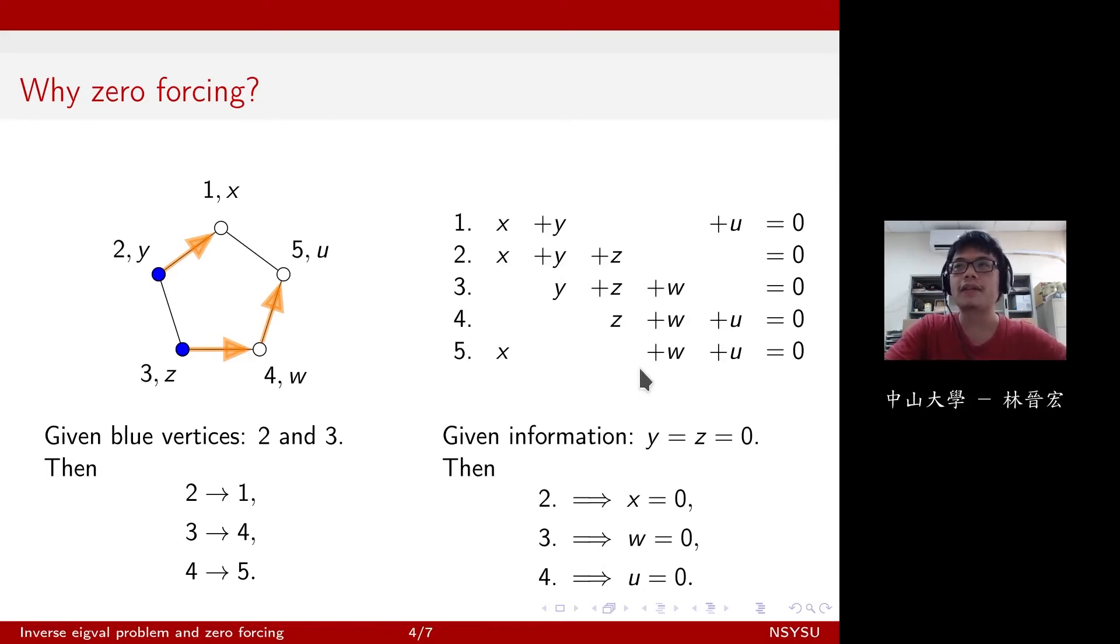So let's look at the system of linear equations on the right-hand side. And you can see that the zero and non-zero-ness of the coefficient is described by the adjacency of the graph on the left-hand side. So with this, we knew that 2, 3 are blue is enough to make 1, 4, and 5 blue sequentially. So the translation of this process is the following.